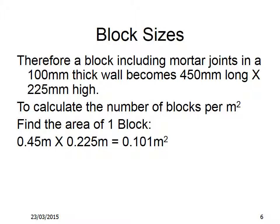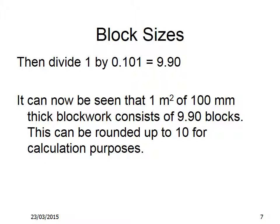To calculate the number of blocks per metre squared, we find the area of one block. This is done by multiplying 0.45m by 0.225m, which gives us 0.101m². The squared is very important. Then divide 1 by 0.101, which equals 9.9. It can now be seen that 1m² of 100mm thick block work consists of 9.9 blocks. This can be rounded up to 10 for calculation purposes.